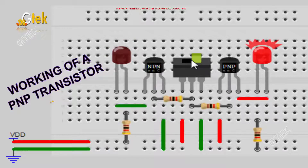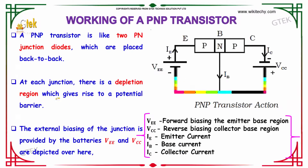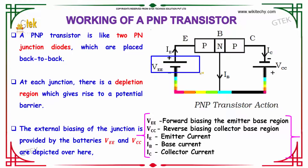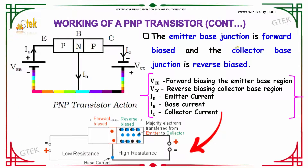A PNP transistor is like two PN junction diodes placed back to back. At each junction there is a depletion region which gives rise to a potential barrier. The external biasing of the junctions is provided by batteries VEE and VCC. VEE forward biases the emitter-base junction (positive to positive), while the collector-base junction is reverse biased. So the emitter-base junction is forward biased and the collector-base junction is reverse biased.